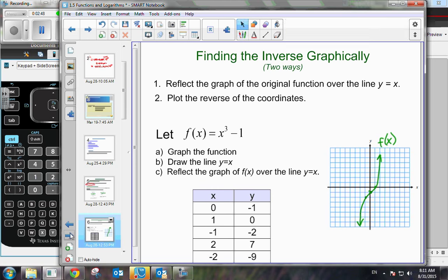Now to graphically examine the inverse function. So for the inverse, then, I would just reverse the coordinates. So instead of being 0, negative 1, we're going to have negative 1, 0. Instead of 1, 0, it would be 0, 1. Negative 2, negative 1. And 7, 2. And negative 9, negative 2. So go ahead and sketch x cubed minus 1. And let's sketch the inverse and see how they compare graphically.